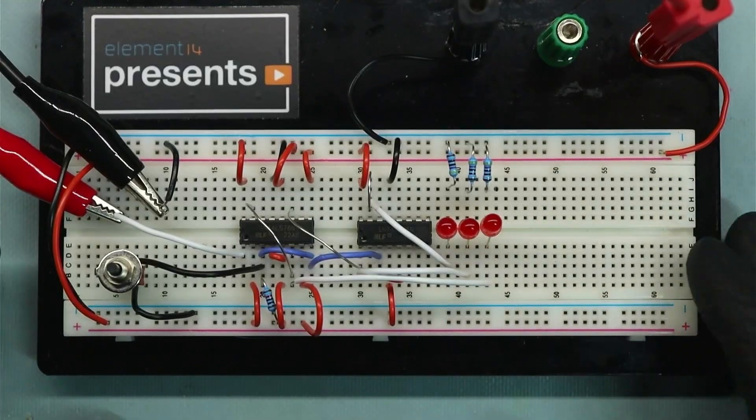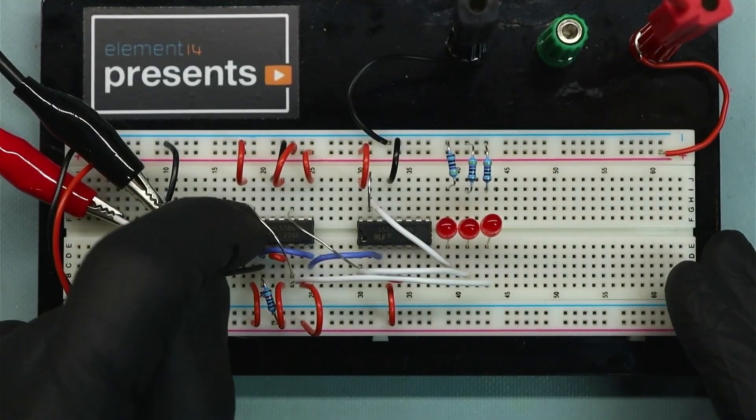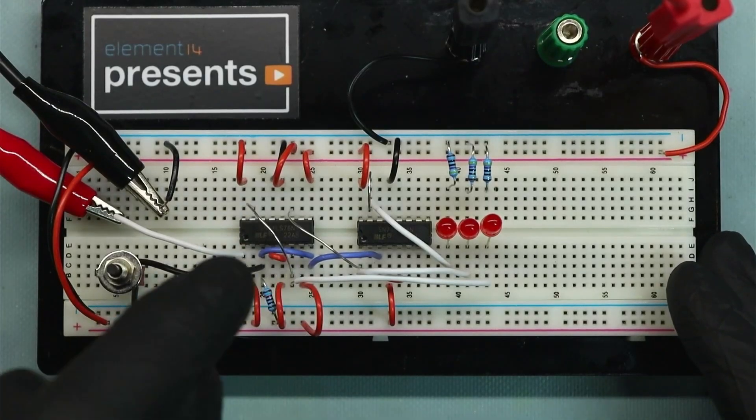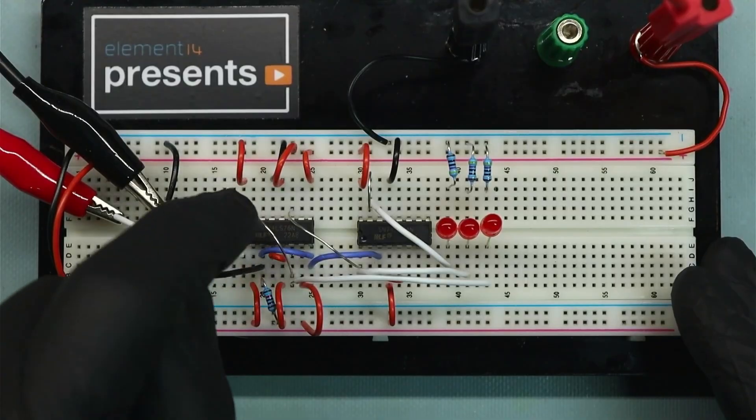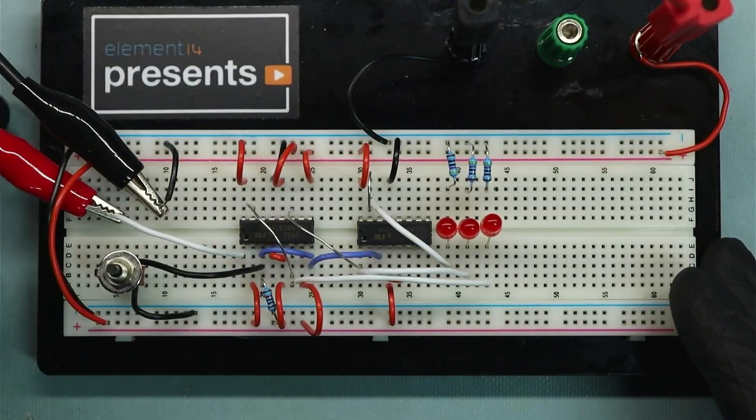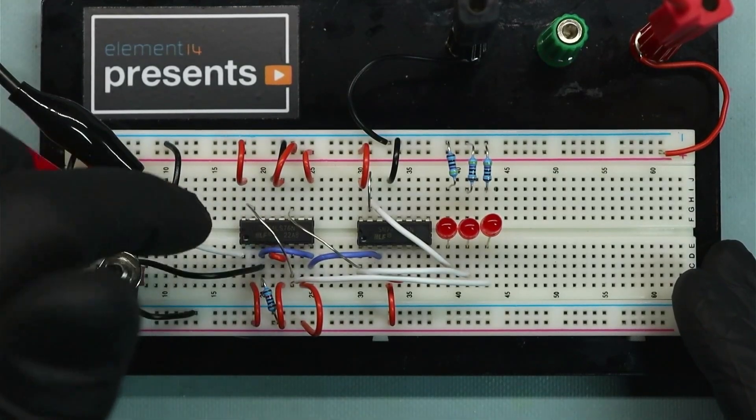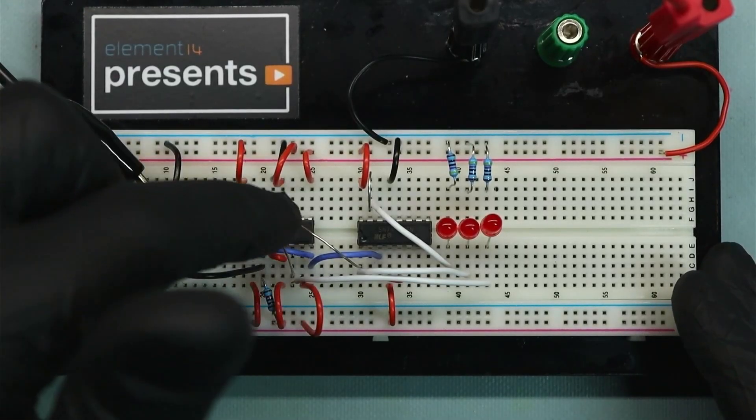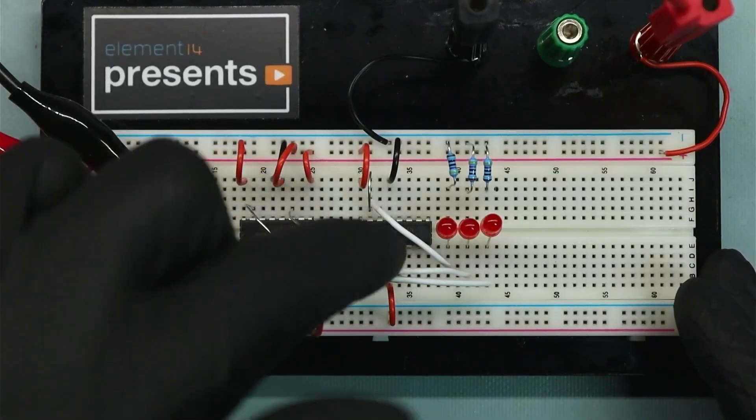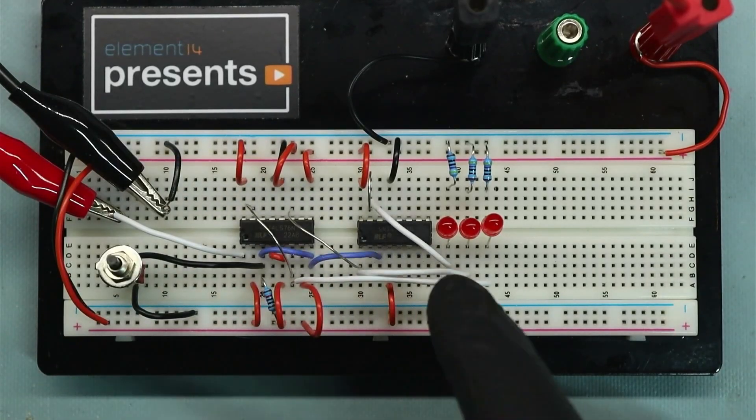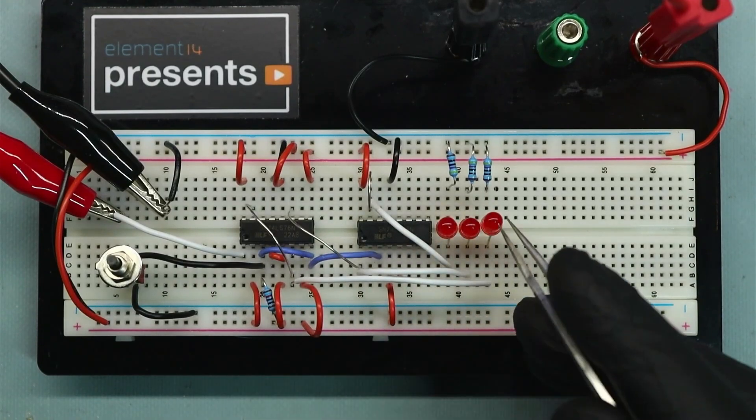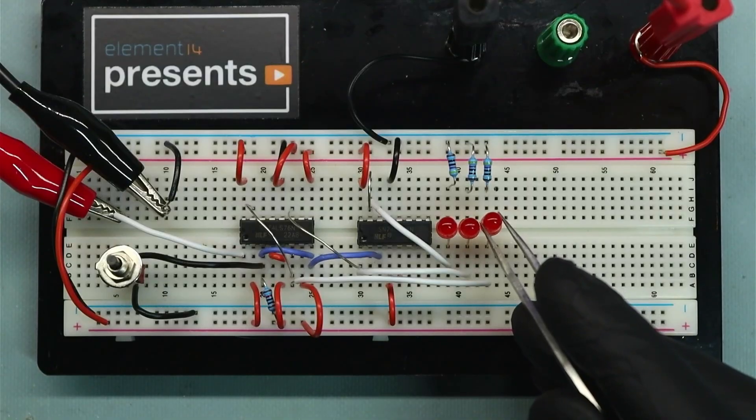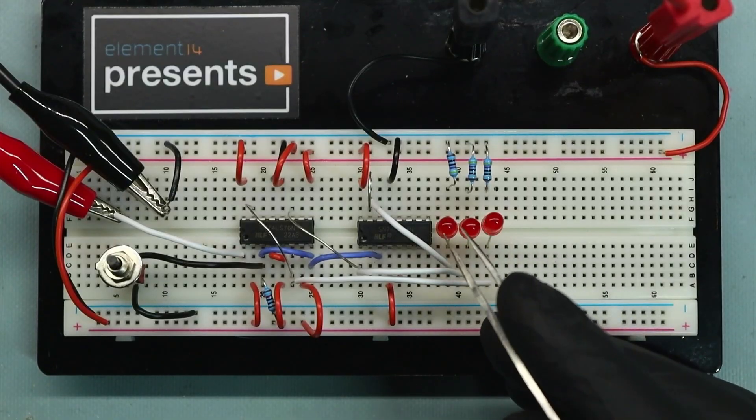All right, so here is our ripple counter. I've constructed this using two 74LS-76s, and those are dual JK flip-flops with set and clear. There are two per IC, so I'm using the clock. My clock signal here is driving the input to one of those JK flip-flops, and then the Q output is driving the next stage, and the output Q of this one is driving the next stage of this guy. The outputs of each of these Qs are going to each of these LEDs. This is my least significant bit. This is my most significant bit. I have two to the power of zero, two to the power of one, and two to the power of two. That gives me a weighted value of one, two, and four, just like binary.